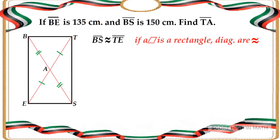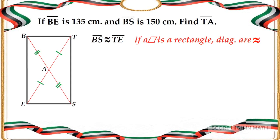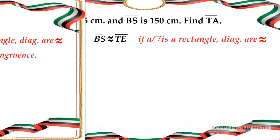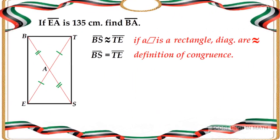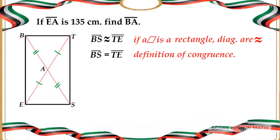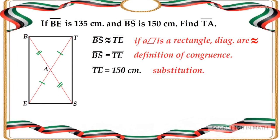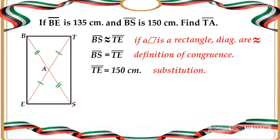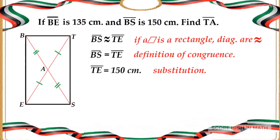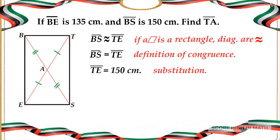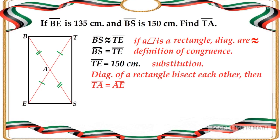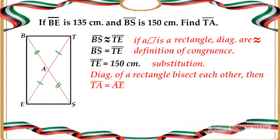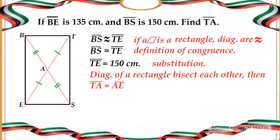If a parallelogram is a rectangle, therefore the diagonals are congruent. So line segment BS is congruent to line segment TE. Therefore, BS is equal to TE — that is the definition of congruence. Line segment TE is equal to 150 cm by substitution. Since the diagonals of the rectangle bisect each other, line segment TA is congruent to line segment AE.